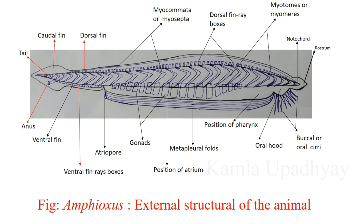On the dorsal side there are V-shaped myocomata or myosepta separating myotomes or myomeres, and these structures are followed by dorsal fin ray boxes. Moving towards the anterior end, there is a notochord which extends to the tail region — that is why it is placed in Cephalochordata. Try to remember all its labelling.